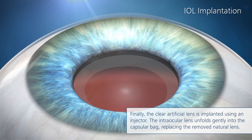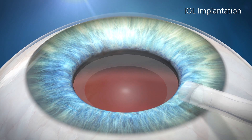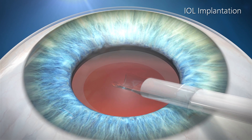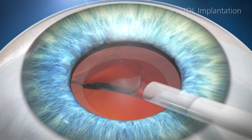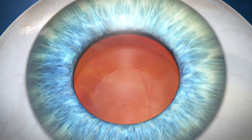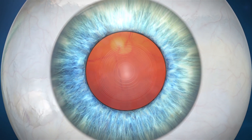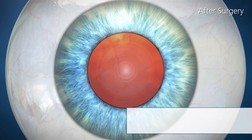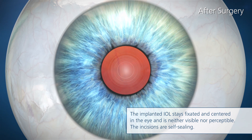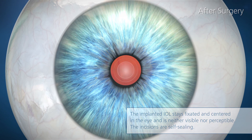Finally, the clear artificial lens is implanted using an injector. The intraocular lens unfolds gently into the capsular bag, replacing the removed natural lens. The implanted intraocular lens stays fixated and centered in the eye and is neither visible nor perceptible. The incisions are self-sealing.